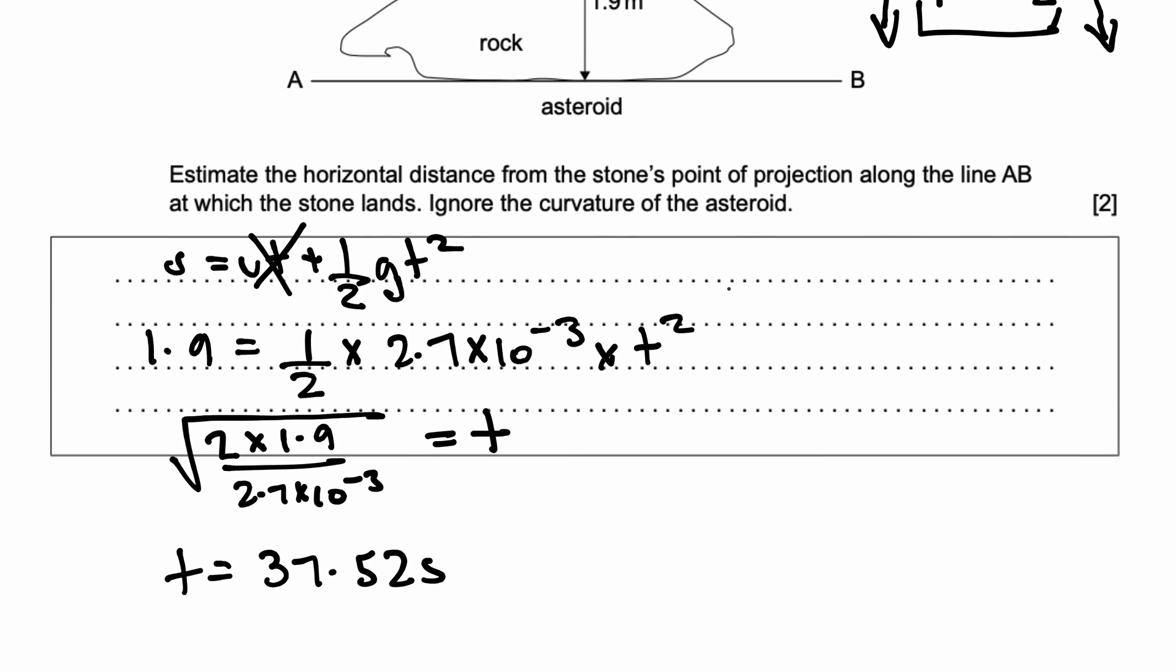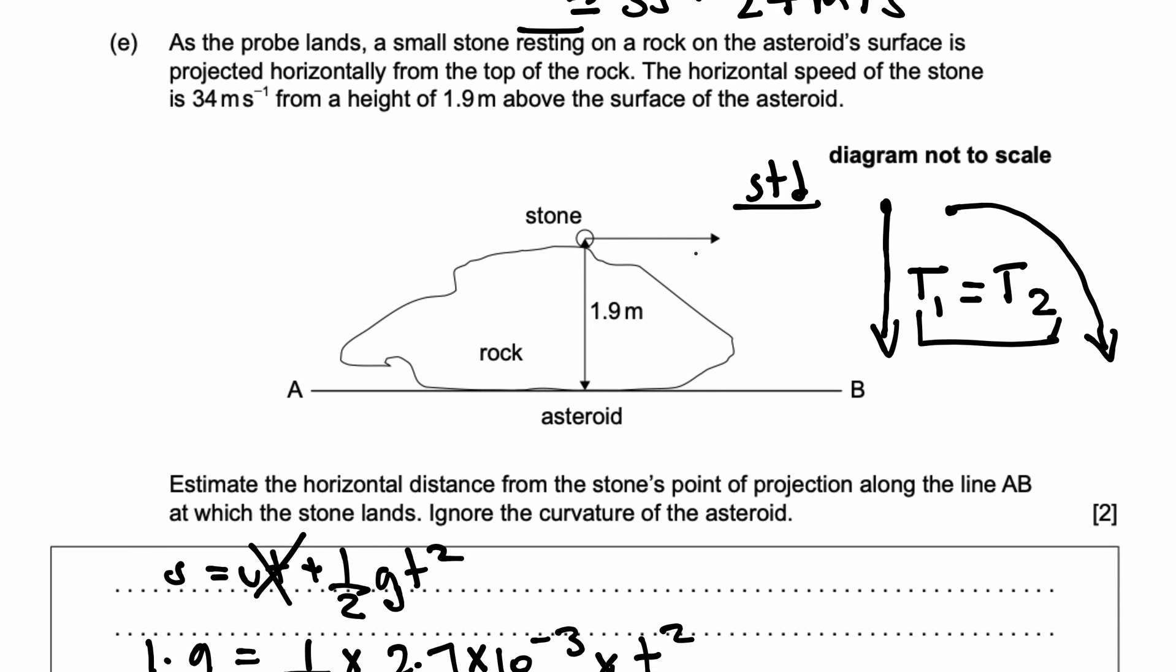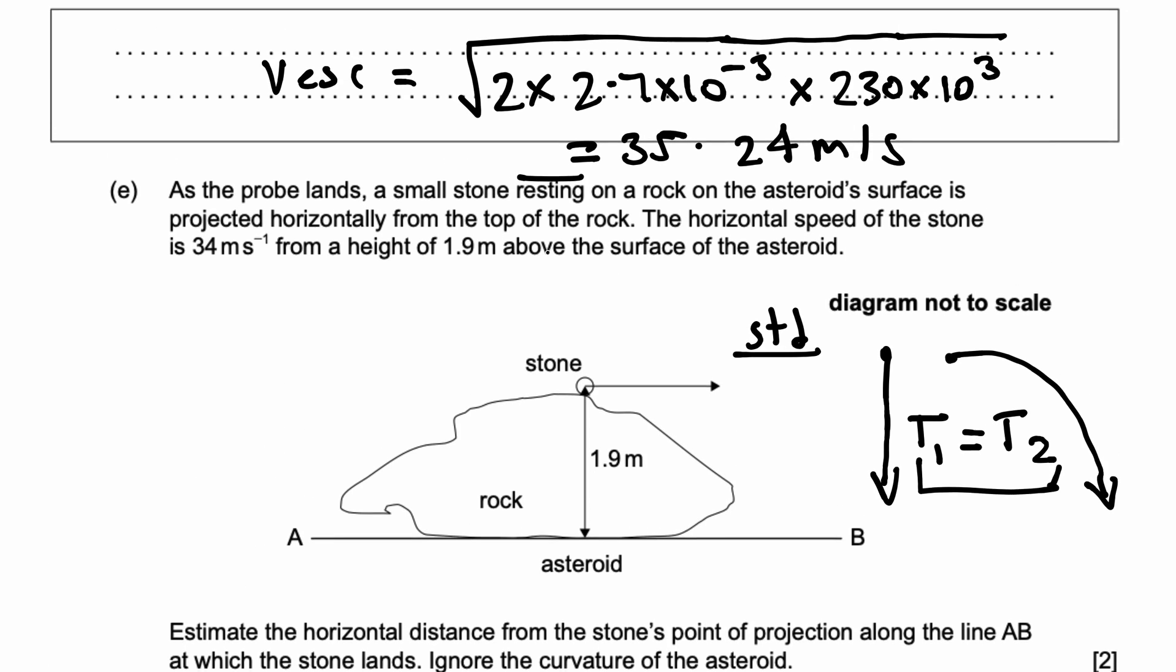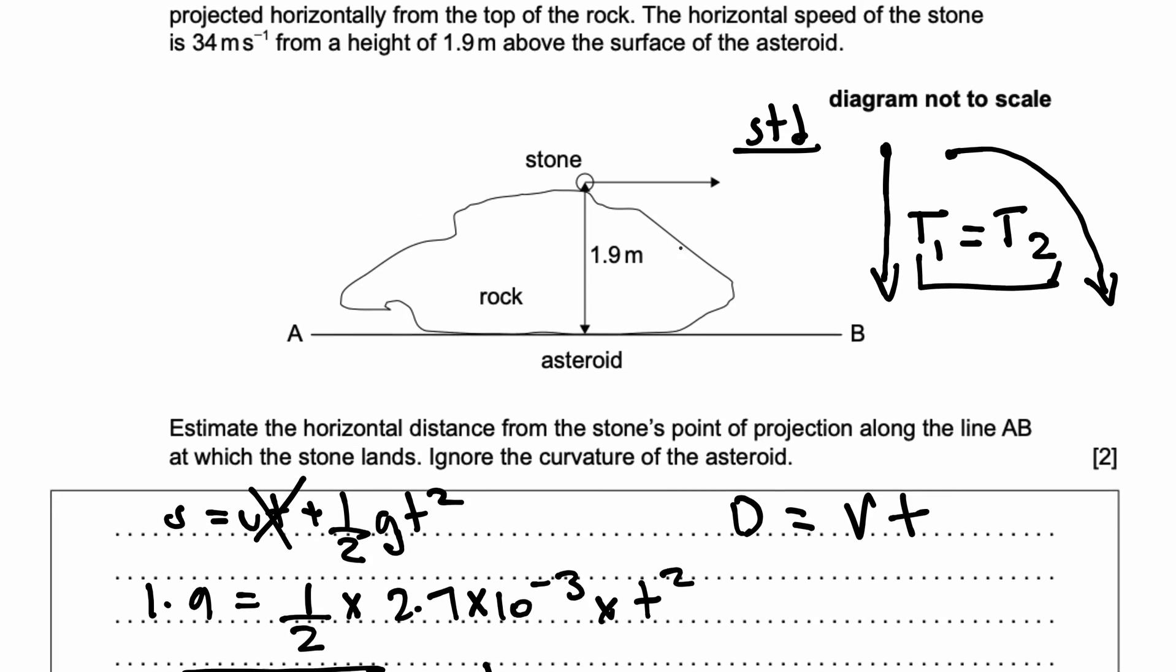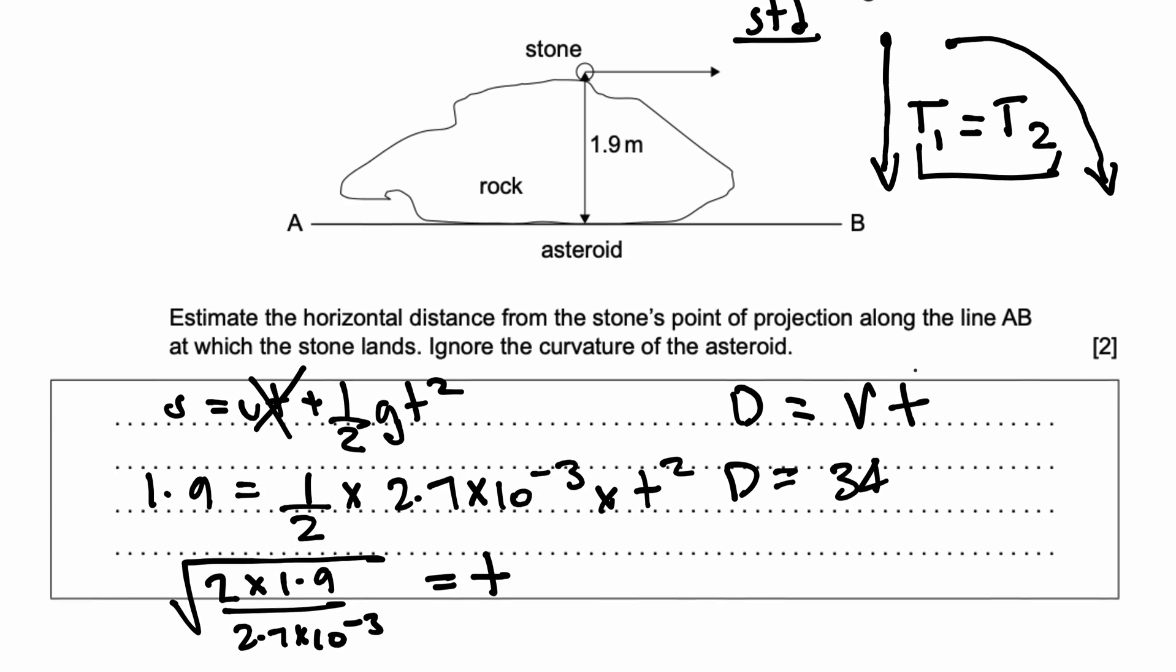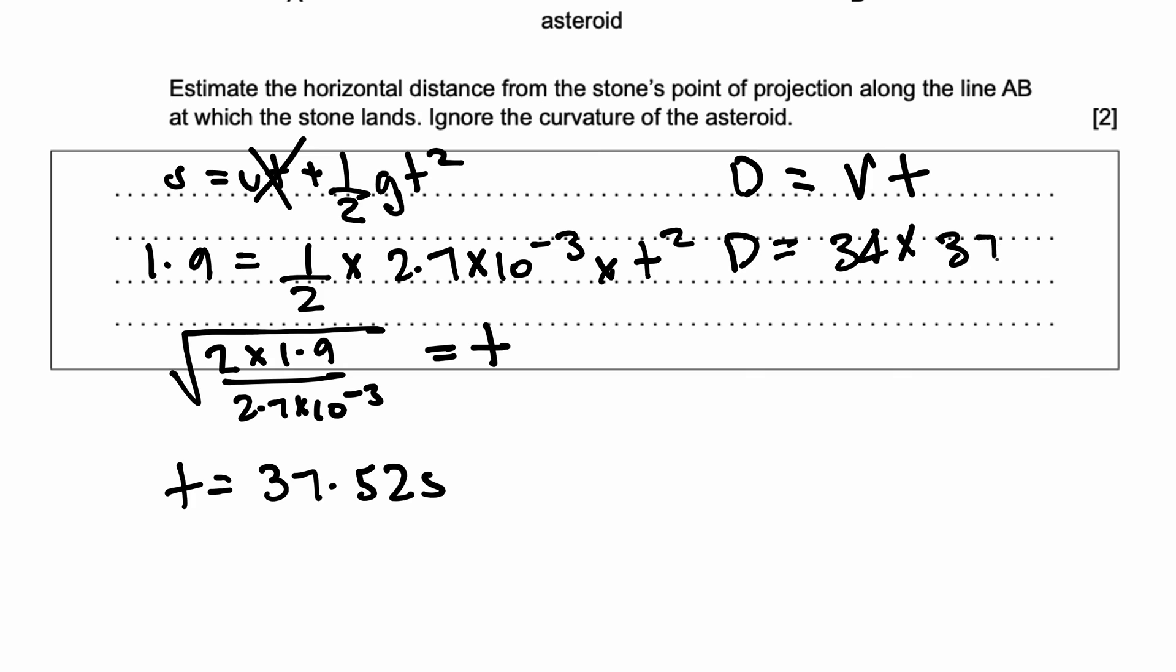Now, we know that the horizontal velocity is always going to be constant. This is also a standard of projectile motion. This is the main concept. So, because it's constant, I can use this formula. D = velocity × time. Where I know the velocity of this stone is equal to 34 meter per second, because that's the horizontal speed. It says right here. So, I can say distance equals 34 times by the time, 37.52. And if I put this on my calculator, I get 1275.68.